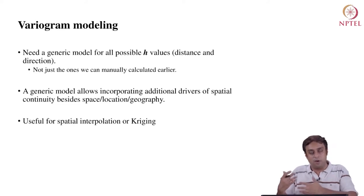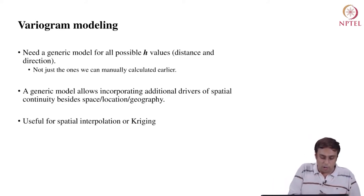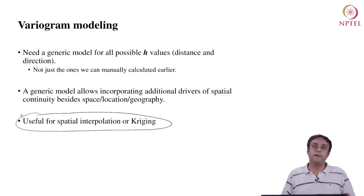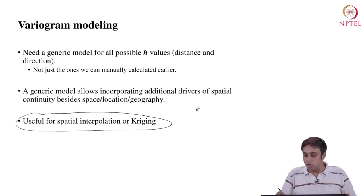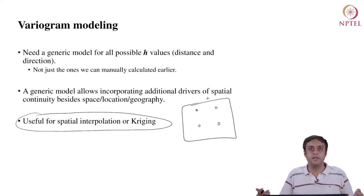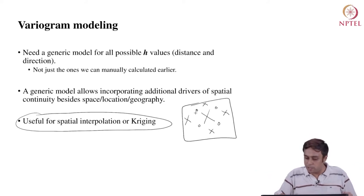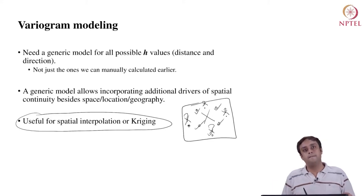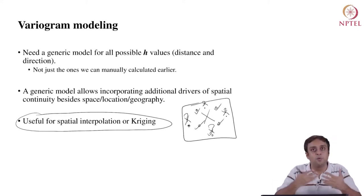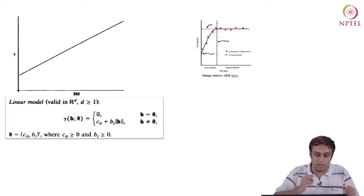A variogram model will also be very useful for spatial interpolation or spatial kriging. All of this spatial dependence measurement is because when you sample in space, you cannot sample every single location. There will be locations with no sample observations, and using what you have observed, our job as statisticians is to predict what might be happening at areas that remain unobserved. With that, let us move forward and study a few variogram models.